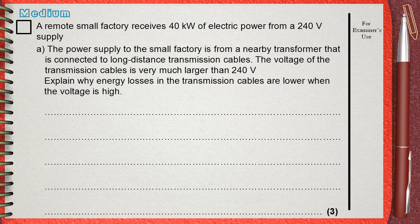A remote small factory receives 40 kilowatts of electric power from a 240 volt supply. The power supply to the small factory is from a nearby transformer that is connected to long distance transmission cables.